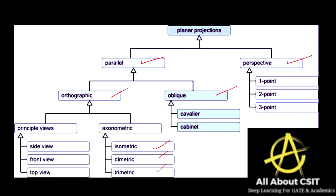Oblique projection allows the image to be projected in cavalier or cabinet mode. Perspective projection can be viewed as one-point, two-point, and three-point views.